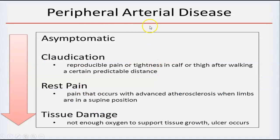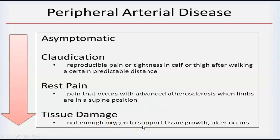The progression of peripheral arterial disease — most people don't get treatment because they are asymptomatic over time. They'll start to have claudication, which is a reproducible pain or tightness in the calf or thigh after walking a certain predictable distance. Patients can also have rest pain — pain that occurs with advanced atherosclerosis when the limbs are in a supine position, often felt at night when lying down. Tissue damage occurs when not enough oxygen can get to the extremities to support tissue growth, so ulcers can develop.